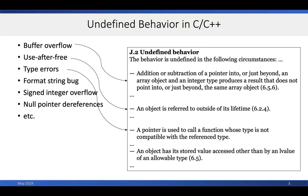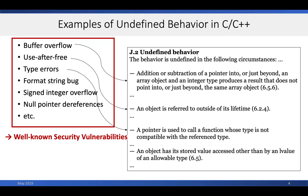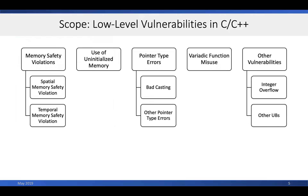C and C++ leave many aspects of possible program behavior undefined, which include buffer overflow, use after free, and type errors — all widely known security vulnerabilities.